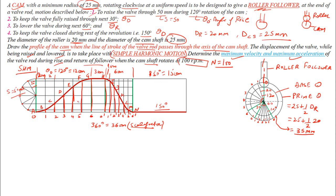Mark these distances on the cam profile diagram along each radial division line for the angle of ascent. Each distance is measured outward from the prime circle. Similarly, mark the distances for the angle of descent along their respective radial lines.